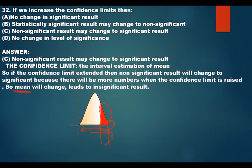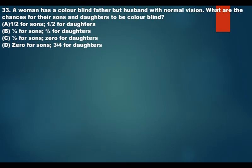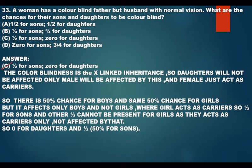A woman has a color-blind father but a husband with normal vision. What are the chances for their sons and daughters to be color blind? The answer is C: half for sons, zero for daughters. Color blindness is X-linked; daughters will not be affected but act only as carriers. There is a 50% chance for sons to be color blind, while daughters carry the gene without being affected — so half for sons and zero for daughters.